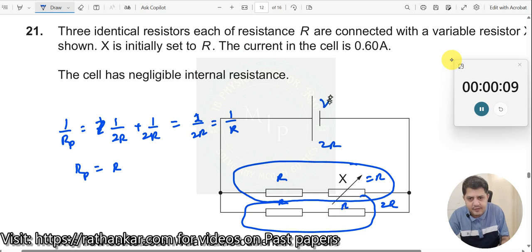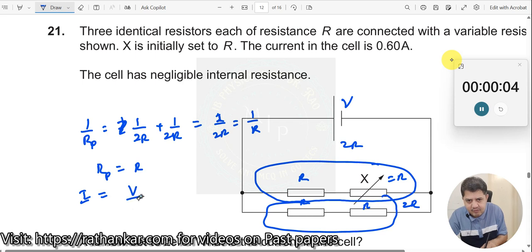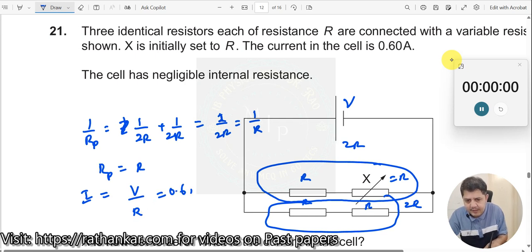In that case, if suppose V is the voltage, I can now write I is equal to V divided by R which is equal to 0.6 amperes.